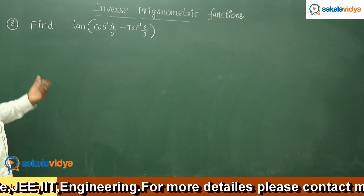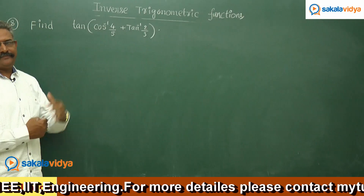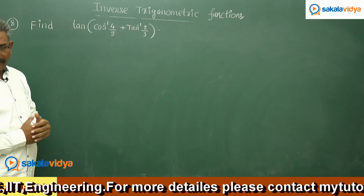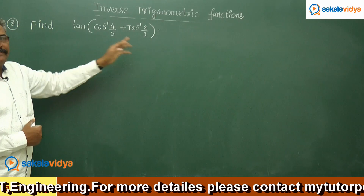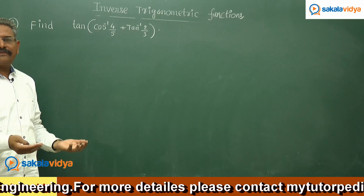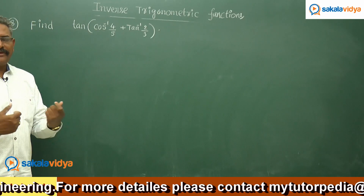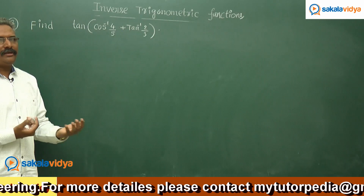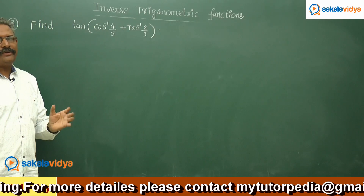Let us move to the next problem: find tan of cos inverse 4 by 5 plus tan inverse 2 by 3. If we say cos inverse 4 by 5 is alpha and tan inverse 2 by 3 is beta, this is tan of alpha plus beta, which equals tan alpha plus tan beta by 1 minus tan alpha tan beta. We need to find out tan alpha and tan beta values before evaluating tan of alpha plus beta. This is the strategy to follow to solve this problem.